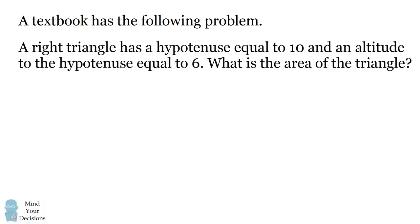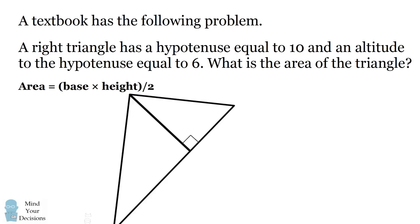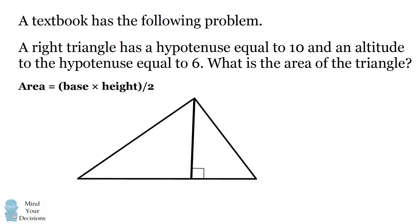You can approach this problem by drawing a diagram. We have a right triangle which has a hypotenuse of 10 and an altitude to the hypotenuse equal to 6. The area of a triangle is equal to its base times its height divided by 2. To apply this formula, it might help to rotate the triangle. The hypotenuse of 10 becomes the base and the altitude of 6 becomes the height. Substituting those numbers in the formula, we get an area equal to 30.